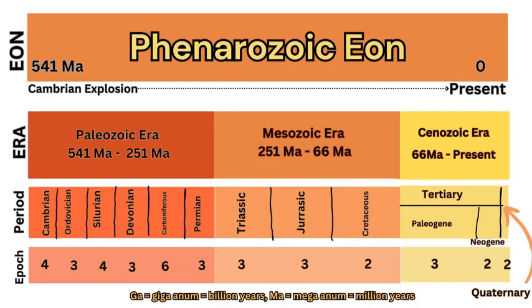This eon is split into three distinct eras: the Paleozoic — 'paleo' meaning old, so old life era — the Mesozoic, middle life era, and the Cenozoic, which is what we're in right now. There are more classifications and subdivisions based on the abundance of life and events. It's also easier to study more recent rocks because there's less chance of them being weathered, eroded and lost to time — so scientists have gathered much more information about this period because there's more evidence, more data and more fossils to work with.